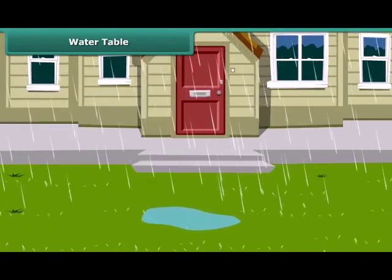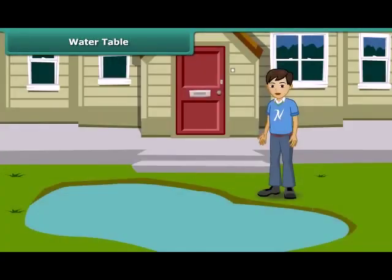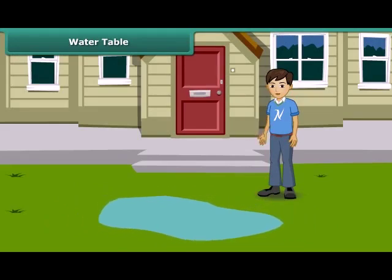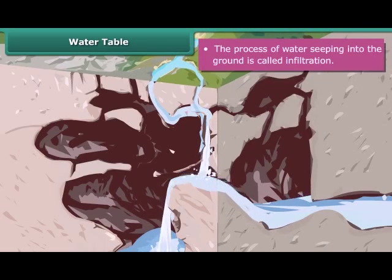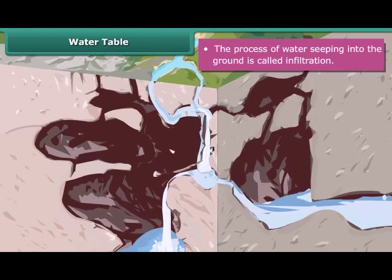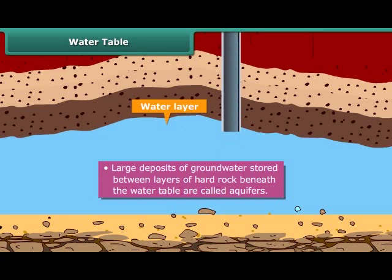You just witnessed heavy showers in your locality. Huge puddles have formed. A few hours later, the puddles are nowhere to be seen. Where has all the water disappeared? It has seeped into the ground. This process of water seeping into the ground is called infiltration. Ground water gets recharged by this process. Large deposits of ground water stored between layers of hard rock beneath the water table are known as aquifers. Water in aquifers is usually pumped out by digging wells at locations where the water table is close to the surface of the ground.